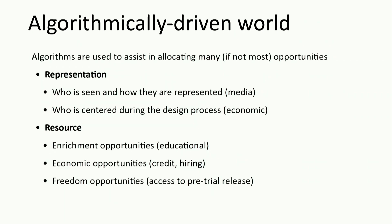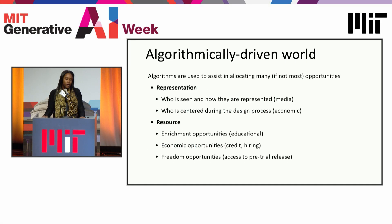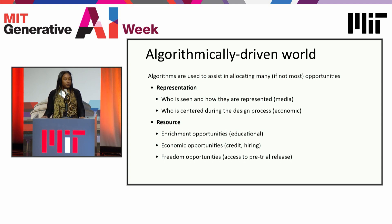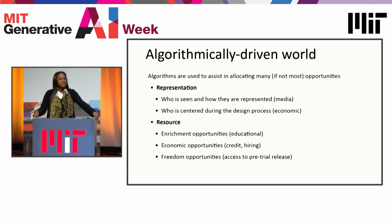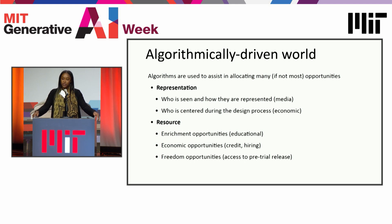We're living in an algorithmically driven world, increasingly so. Algorithms are being used to assist in allocating many, if not most, opportunities. They control who's represented, who is seen, and how they're represented in many circumstances — so our media. Who is centered during design processes is also up for debate in many communities. They're also deciding many resource allocations: enrichment opportunities, educational opportunities, economic opportunities such as credit and hiring, as well as even freedom opportunities such as access to pretrial release.